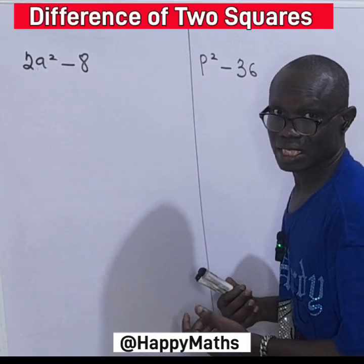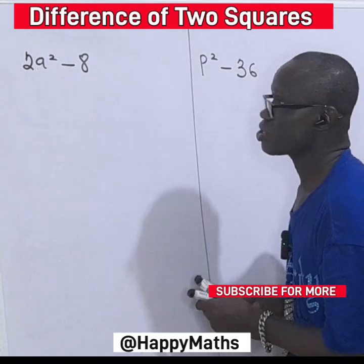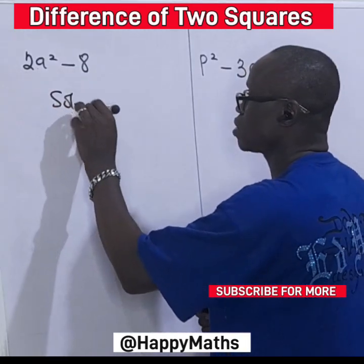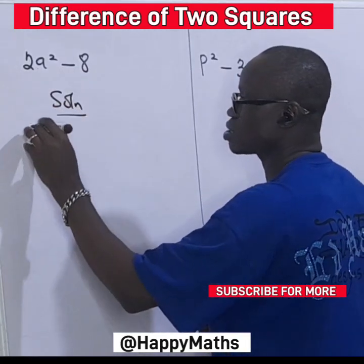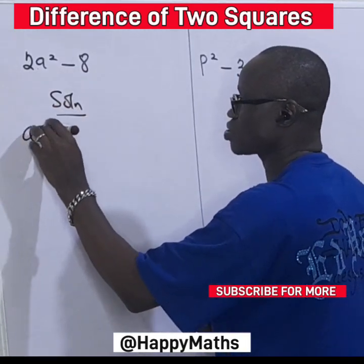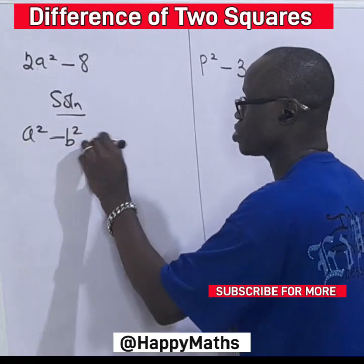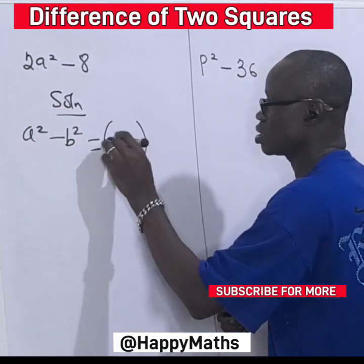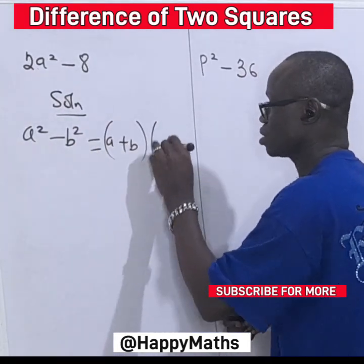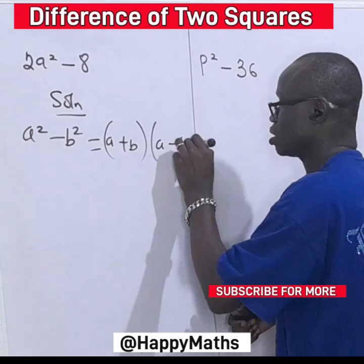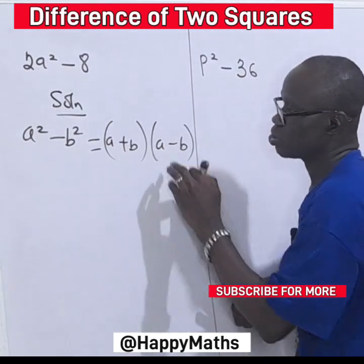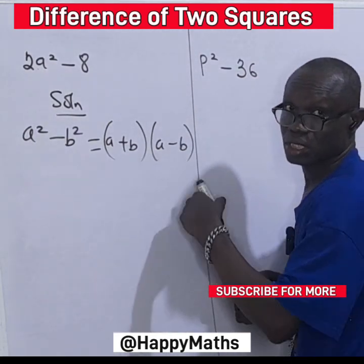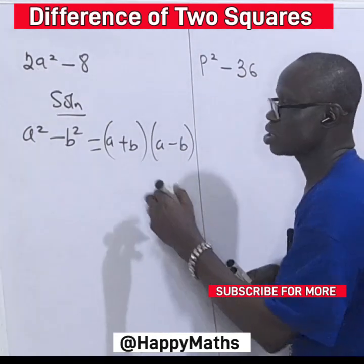You may recall that the difference of two squares, a squared minus b squared, equals a plus b times a minus b, or a minus b times a plus b.